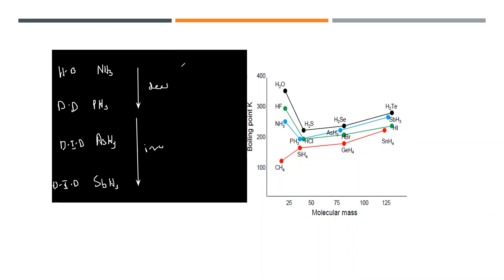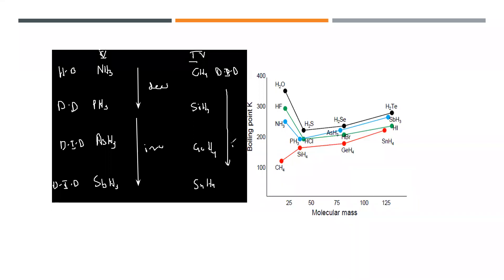But why does this anomaly not happen for group four hydrides? Group four hydrides don't have a hydrogen bond, because hydrogen bonding is only possible when hydrogen forms a bond with more electronegative elements such as oxygen, fluorine, or nitrogen. For group four, the main forces are dipole-dipole or dipole-induced dipole. Dipole-induced dipole force increases as the number of electrons increases, so CH₄ has a lower boiling point than SiH₄, SiH₄ lower than GeH₄, and GeH₄ lower than SnH₄. The reason is that dipole-induced dipole forces increase with the number of electrons in the structure.